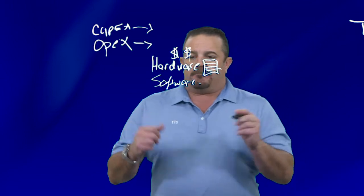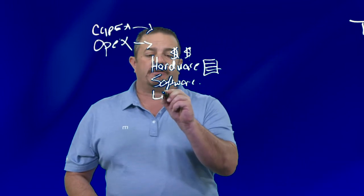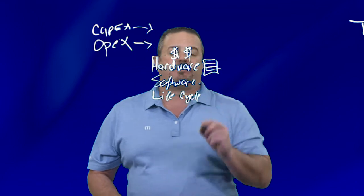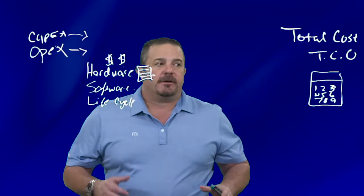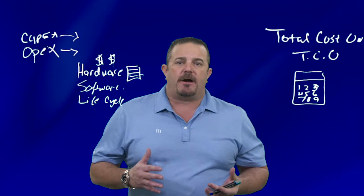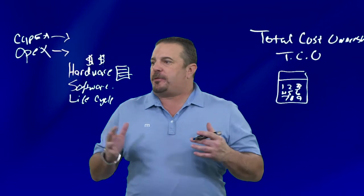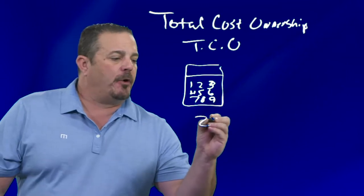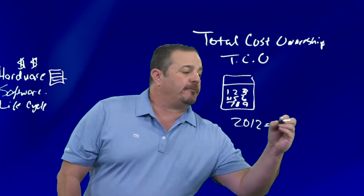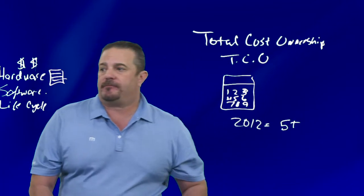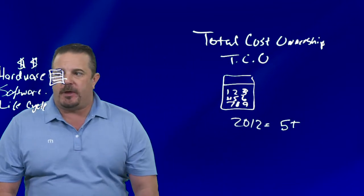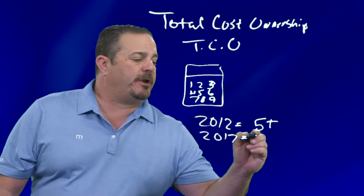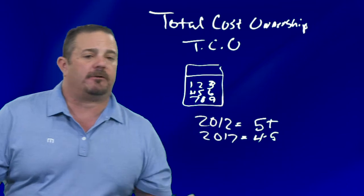They also ask about software — how much do you pay for that? And then the most important question: what's the lifecycle? How long is this gear going to stay around? Traditionally, in 2012 most companies were holding their gear for five-plus years. By 2017, we see that it's between four and five years, so it's gone down a little bit.